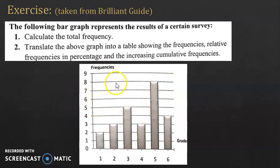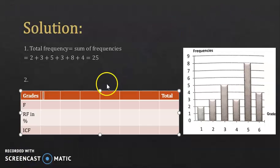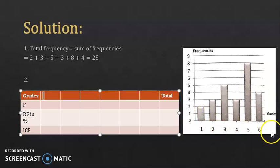The second part is to translate the graph into a table showing the frequencies, relative frequencies in percentage, and increasing cumulative frequencies. So you have three things to put in the table, and you always have the first row for the character. The character in this graph is the grades, so your table should have 4 rows. Start by filling the grades — you can get them from the graph: 1, 2, 3, 4, 5, and 6.